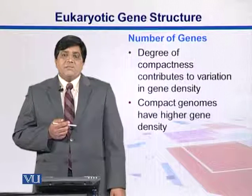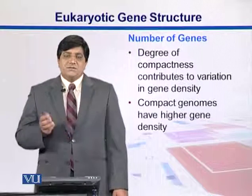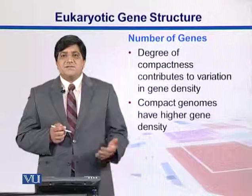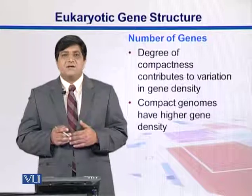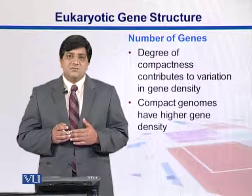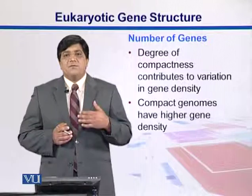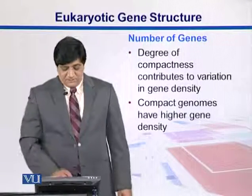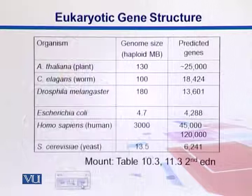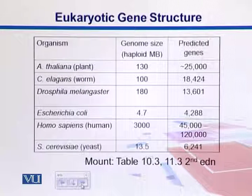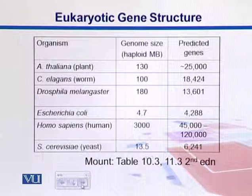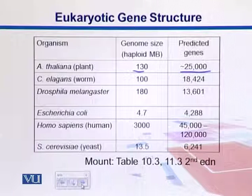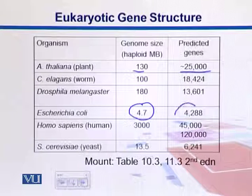Now we talk about the degree of compactness. In compact genomes, where genome size is small, the relative proportion of genes is higher, which contributes to gene density — compact genomes have higher gene densities. Looking at this table, we see different genomes, mostly eukaryotes. The genome size of Arabidopsis is 130 MB, with approximately 25,000 genes. E. coli, one prokaryote, has a genome size of 4.7 MB with over 4,000 genes.